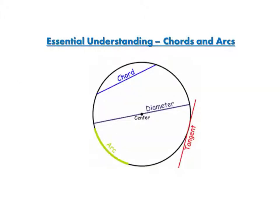What we're going to be looking at in this lesson is a chord. Remember, a chord is a line segment that goes from one side of the circle to the other but not necessarily through the center of the circle like the diameter does. And an arc is part of the outside of the circle.